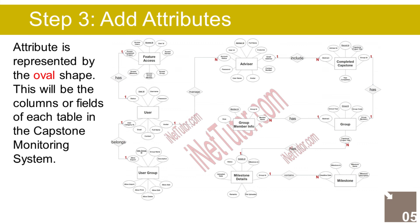The Milestone entity has the following attributes: Milestone ID (primary key, represented with underline), Milestone Name, Milestone Description, and Deadline. The Milestone Details entity has the following attributes: Detail ID (primary key, represented with underline), Milestone ID, Group ID (foreign key), File Uploaded, Remarks, Uploaded Date, and Status.